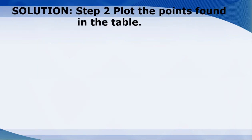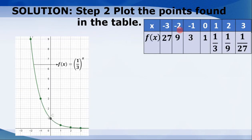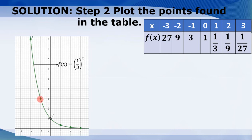Now we have to plot the points found in the table. This is the table previously discussed, and this is the graph. At x = -3, the counterpart is 27, up there. At x = -2, f(x) = 9. At x = -1, we have 3. At x = 0, y = 1. At x = 1, we have 1/3. At x = 2, we have 1/9. At x = 3, 1/27, and so on.